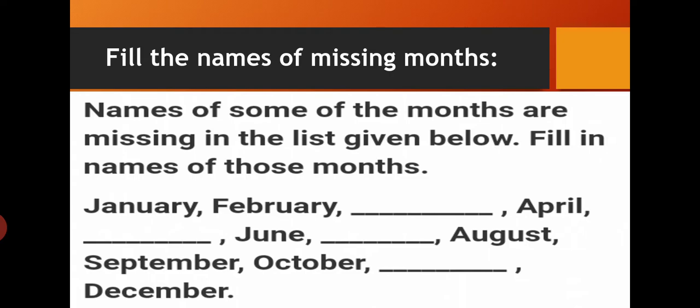Now here in the list some of the months are missing — you have to write down those missing months. So, January, February. After February, yes it is March. Then April is given. After April, May.